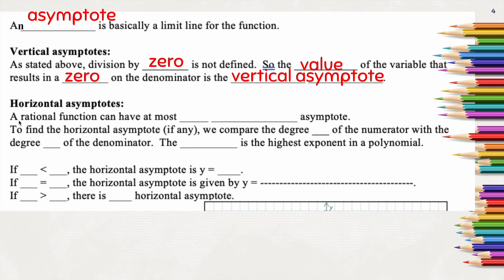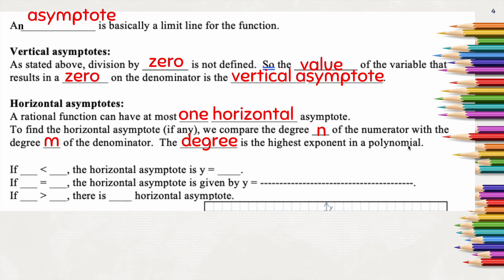A rational function can have at most one horizontal asymptote. To find the horizontal asymptote, if any, we compare the degree n of the numerator with the degree m of the denominator. Remember, the degree is just the highest exponent in a polynomial — we want to look at the numerator and denominator and ask which has the highest exponent. That's the degree; it's just the biggest exponent.